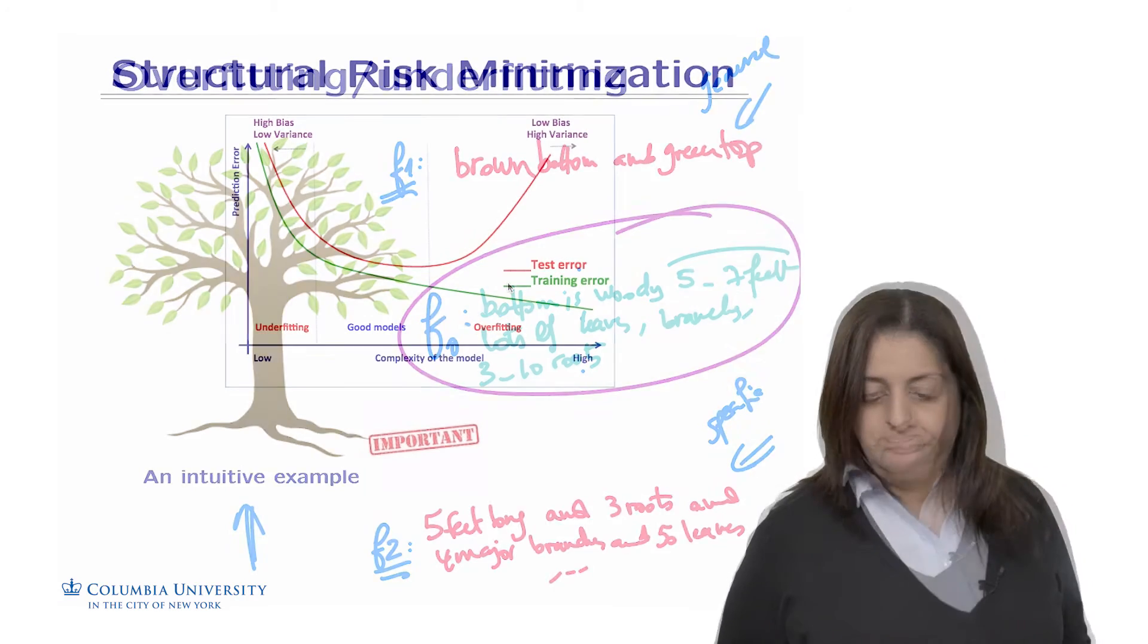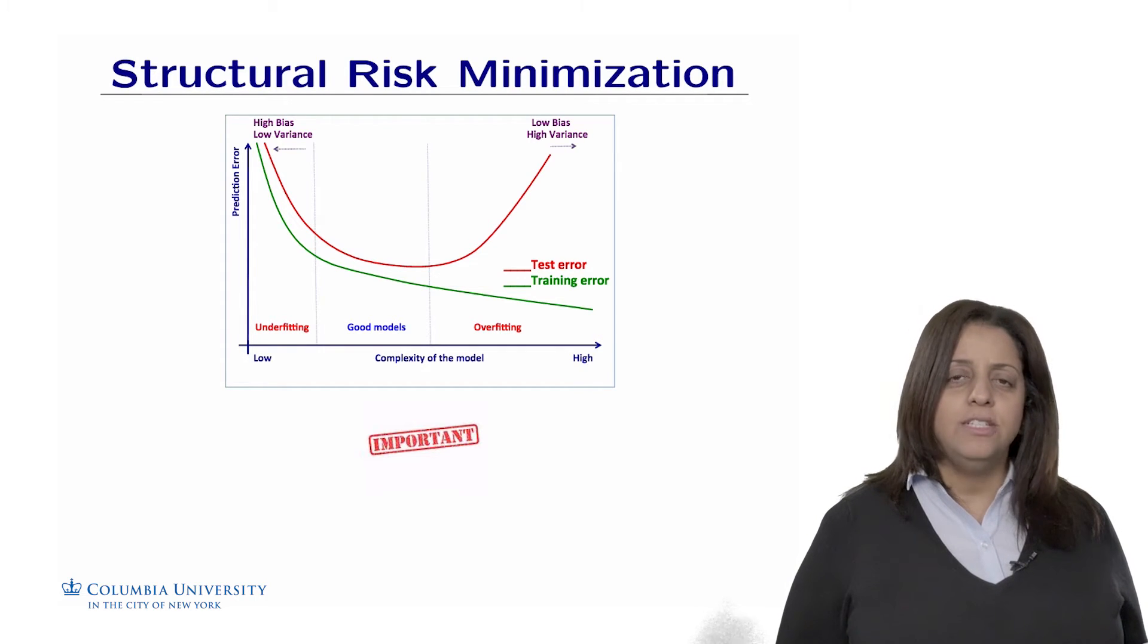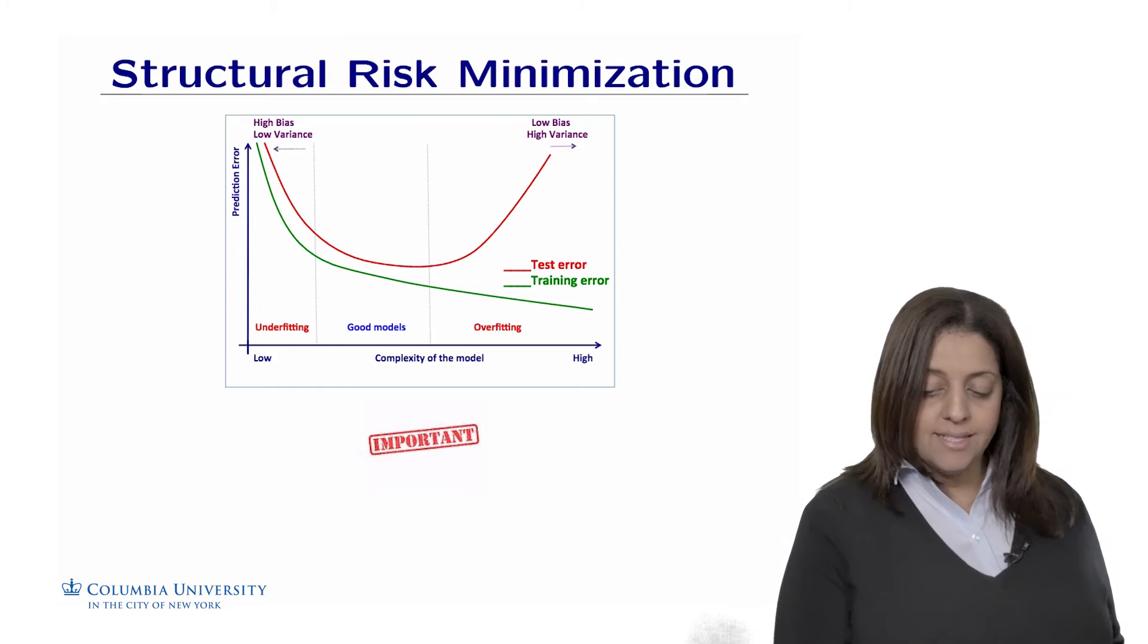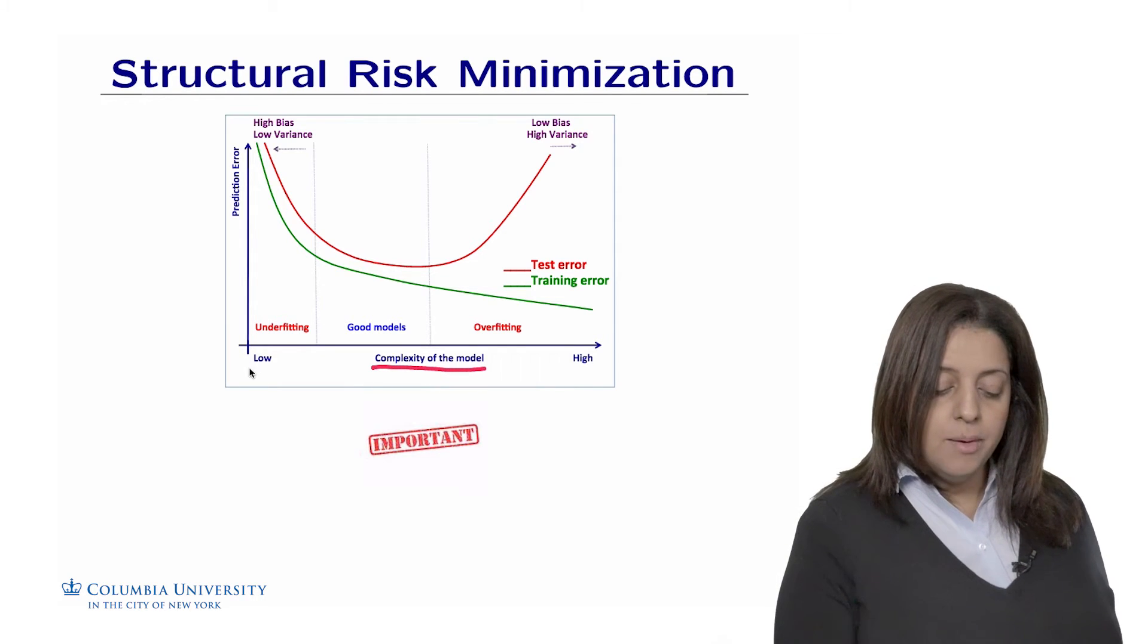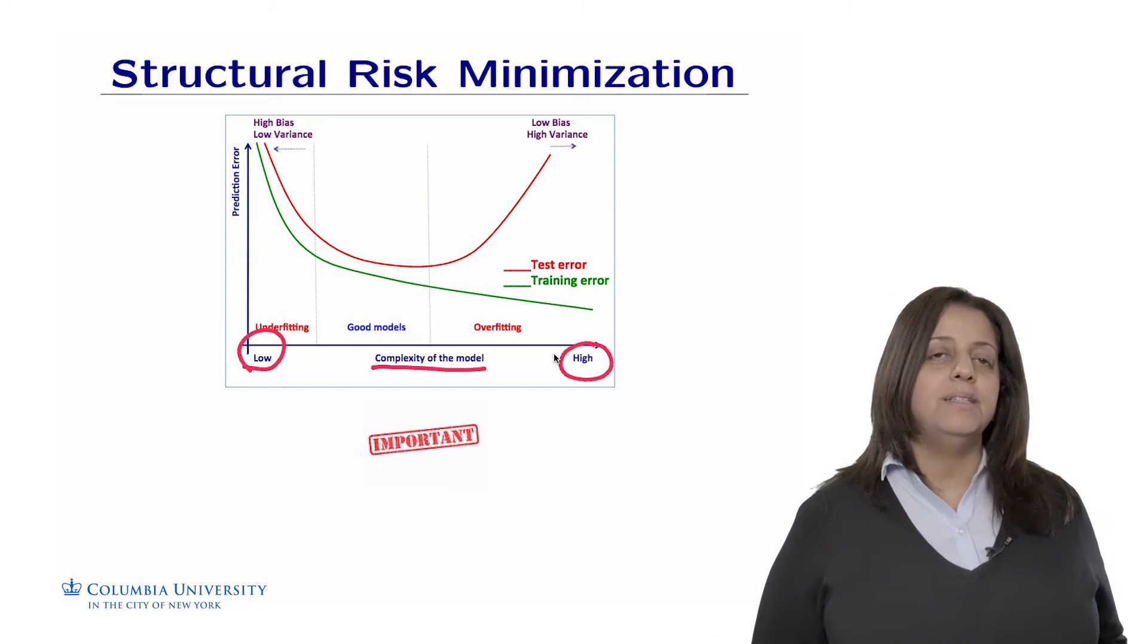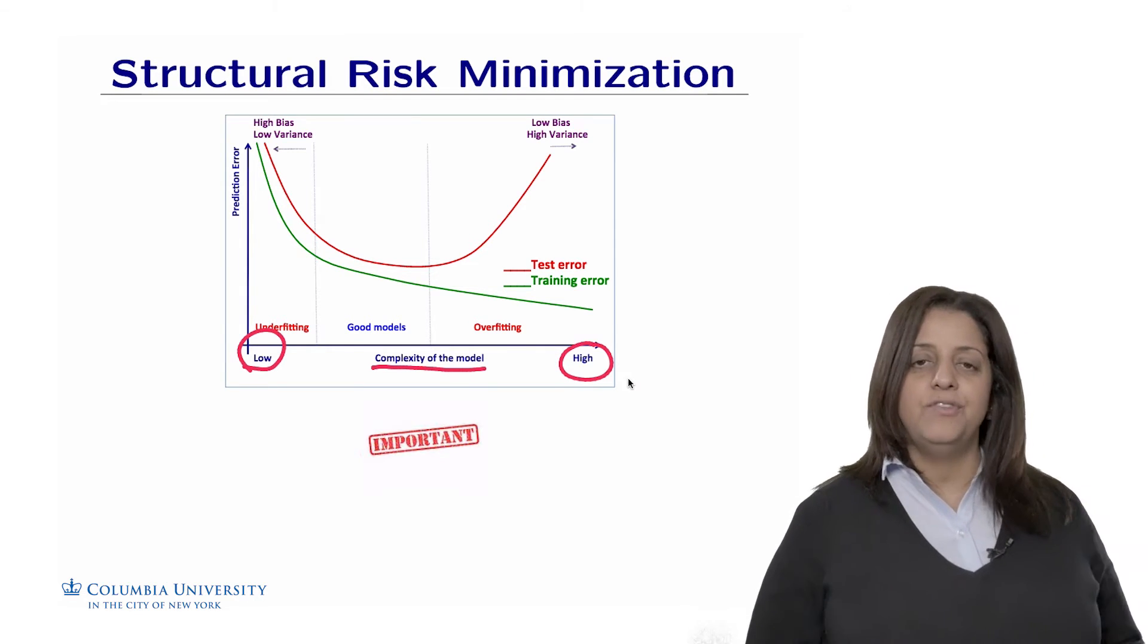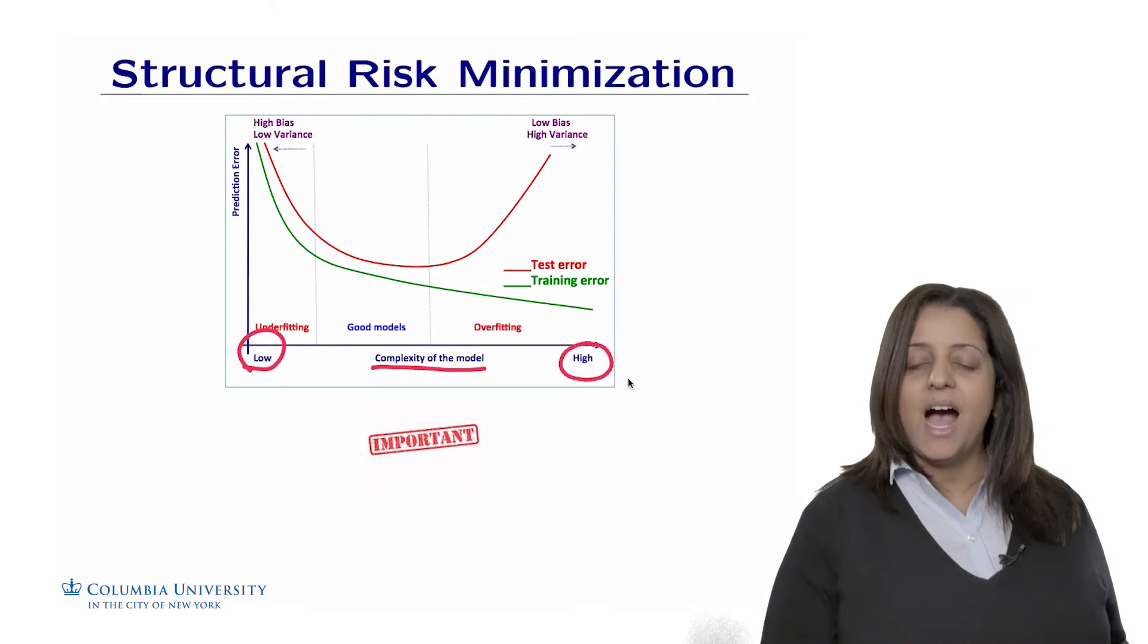At the core of machine learning is what we call structural risk minimization, which actually aims to find the best possible models given some problems. So on the x-axis, what we have here is the complexity of the model. So we have a set of models going from the very low complexity models to very high complexity models. So for example, the model that tells that the tree has a brown bottom and a top green is a low complexity model. It's very simple. The other one that has very specifics about the number of leaves, branches, and so on, is a high complexity model.